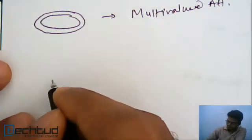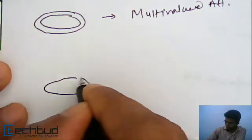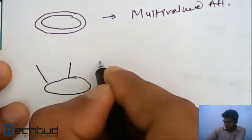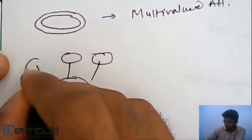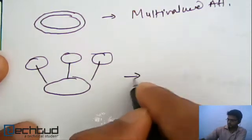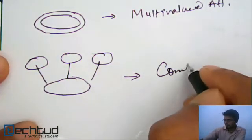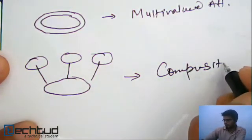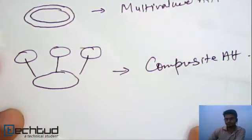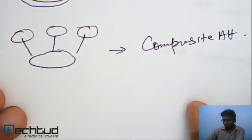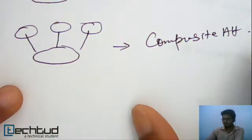Now, you will see that attribute having multiple branches like this. Okay. Like this. Okay. So, this is composite attribute. Composite attribute. Okay. Composite attribute we know already. Right? Okay.